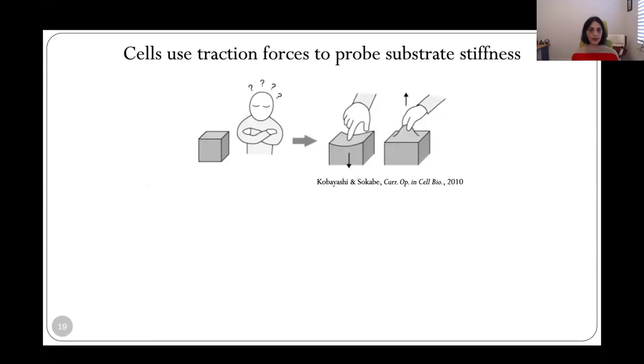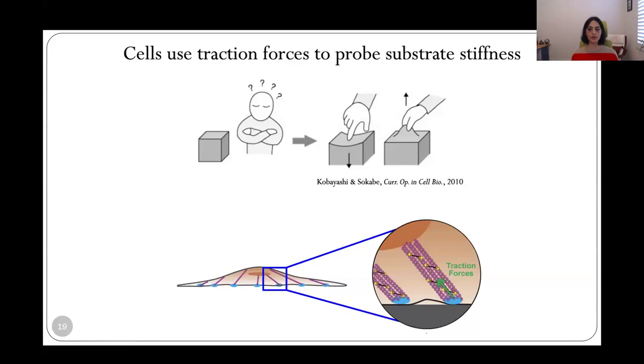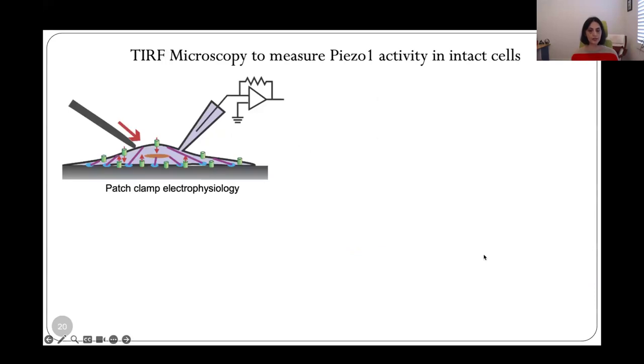But cells also generate mechanical forces. Just like you or I would poke or pull on an object to figure out whether it's soft or hard, cells tug on the substrate to determine its stiffness. And these tugging forces, which are called traction forces, are generated by the actomyosin skeleton. And this is a lot smaller than the external forces that we can apply onto cells. And so we were curious whether these cell-generated forces that are orders of magnitude smaller than the external forces that cells experience may activate the channel. So to look at this, we had to move away from the standard assay for channel activity, which is patch clamp electrophysiology. And we had to come up with some new ways of studying the activity of the channel.